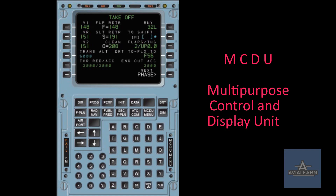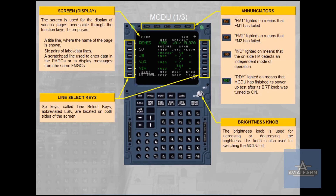MCDU — the Multi-Purpose Control and Display Unit. The MCDU Display screen is used for the display of various pages accessible through the function keys. It comprises a title line where the name of the page is shown, six pairs of label data lines, and a Scratchpad line used to enter data in the flight management and guidance computers or to display messages from the FMGCs. Six keys called Line Select Keys, abbreviated LSK, are located on both sides of the screen.